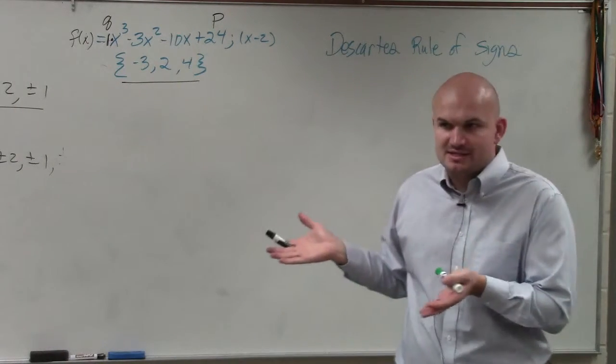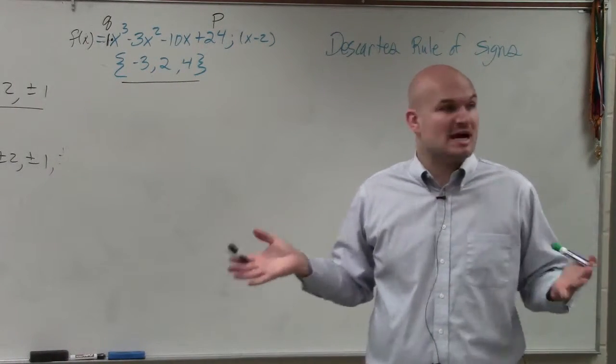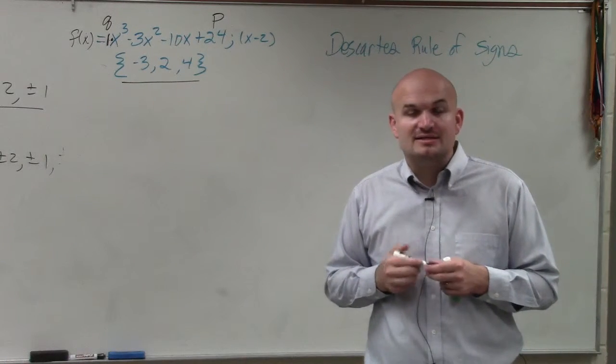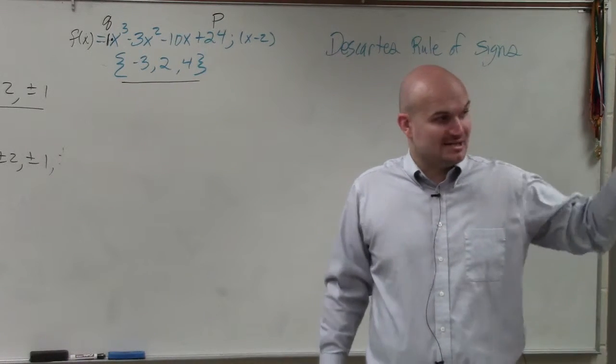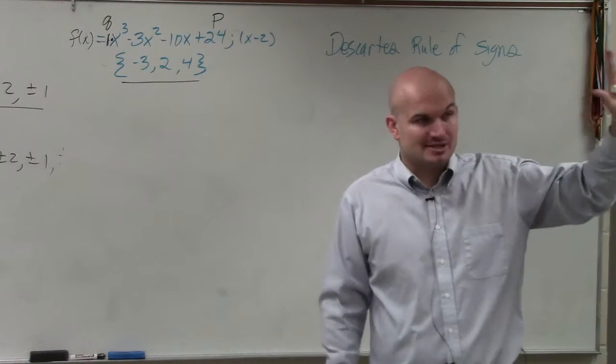So the rational zero test tells us what the list of possible rational zeros are. Descartes' rule of signs tells us the number of real positive, real negative, and complex zeros.